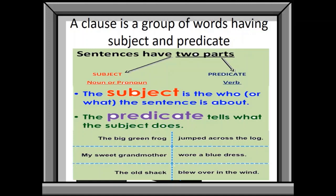In the first example, the big green frog. It is a subject. While the action he performed is a predicate. What action did he perform? He jumped across the log. So it is a predicate. Similar to the other examples.